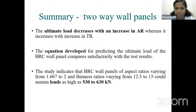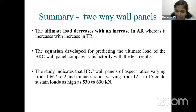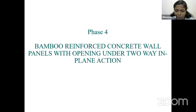Summary of Phase 3: ultimate load decreases with an increase in aspect ratio. The developed equation compares satisfactorily with the test results. The study indicates that bamboo reinforced concrete wall panels of aspect ratio ranging from 1.67 to 2 were able to carry loads of 530 to 630 kN.